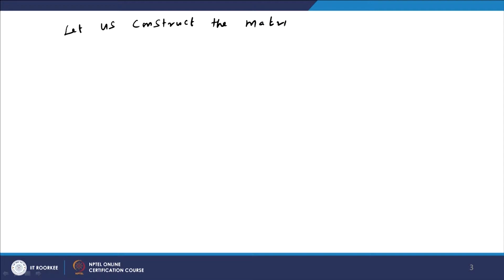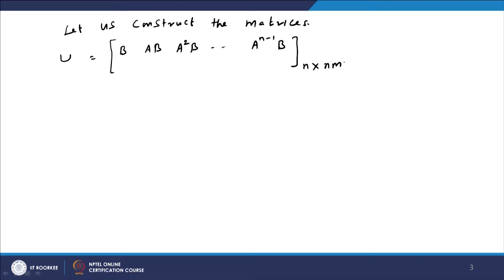Before proving the theorem, let us construct the following matrices. First, construct the controllability matrix U = [B, AB, A²B, ..., Aⁿ⁻¹B]. This is already known to us — it is an n×(mn) matrix, and the rank of U equals n because the system is controllable. That is the already given fact.